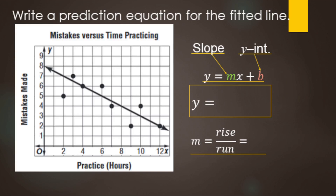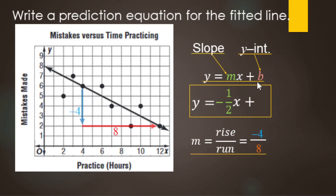For slope, that's rise over run, and we look for nice points. This fitted line goes through two data points, so we'll use those. Counting squares: it went down 4, so the rise is negative 4, and then over 8 for the run. Negative 4 over 8 reduces to negative one-half. That replaces the m for slope. The y-intercept is 8, so our prediction equation is y = −½x + 8.